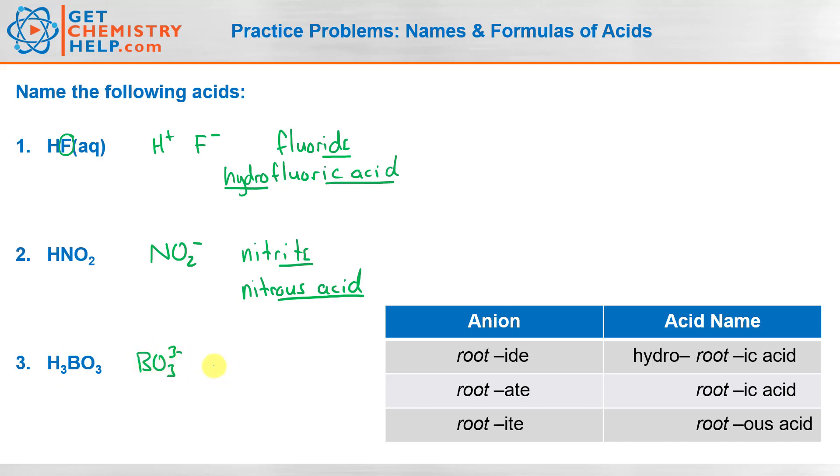Well, this polyatomic is one of the ones you hopefully know by now. It's called borate ion. So this ends in ate, A-T-E. So what do we do if the anion ends in ate? Well, the acid ends in ic acid. So borate becomes boric acid.